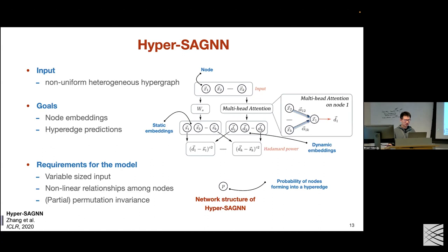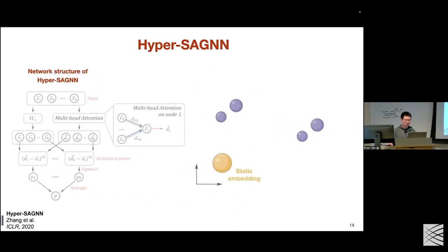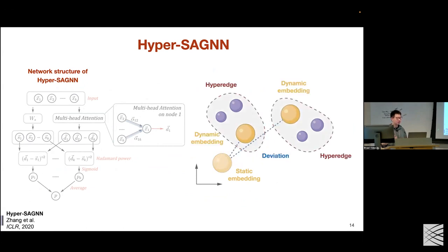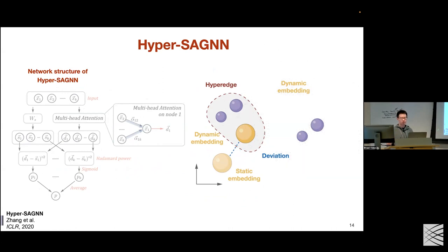We calculate pairwise distances between each pair of static and dynamic embeddings, convert to a probability score using a sigmoid function, and average these scores to get the final probability of the node tuple forming a hyperedge. Essentially, HyperSAGNN is built on the assumption that each node needs to deviate from its general properties to form a hyperedge with other nodes. This deviation is characterized by the pairwise distance term. A hyperedge is only stable if this deviation is relatively small for all its node members.